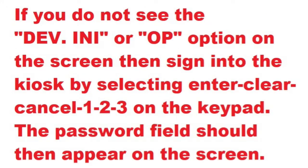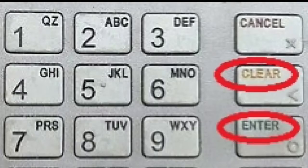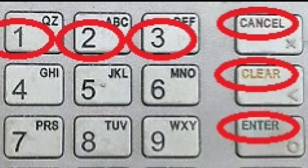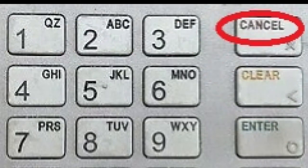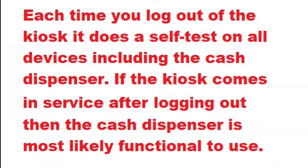If you do not see an error message on the front screen but you wish to retest the dispenser, sign into the kiosk. Enter clear, cancel, 1-2-3 to bring up the password prompt and enter your six-digit password. Once logged in, hit cancel and you will log out. Each time you log out of the kiosk, it does a self-test on all devices, including the cash dispenser. If the kiosk comes in service after logging out, then the cash dispenser is most likely functional and ready to use.